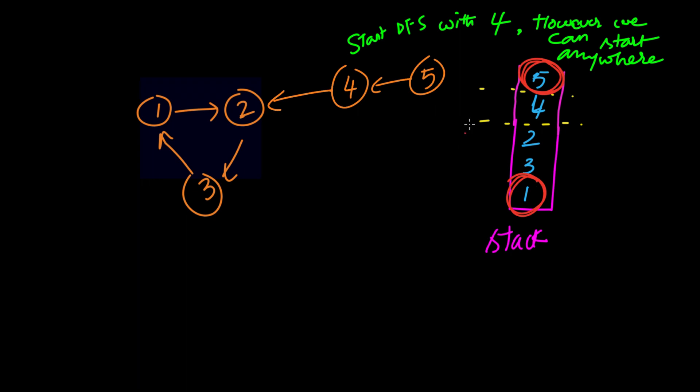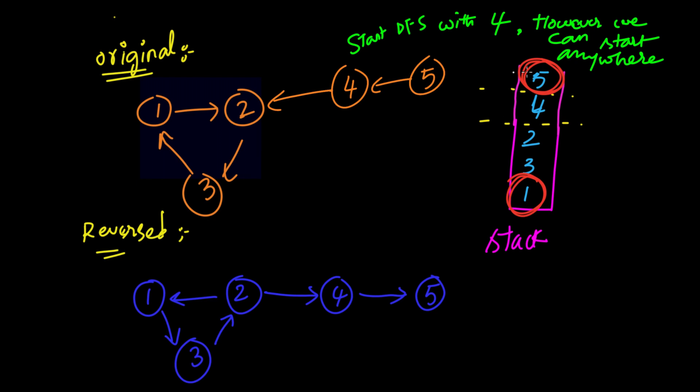So, it means when we pop each vertex from the stack and we do a traversal on the reversal graph using this vertex which we have just popped from the stack, we can see that there is no way that the traversal proceeds into another connected component because we have reversed the connecting edges between the connected components.